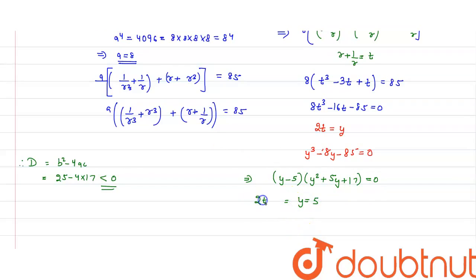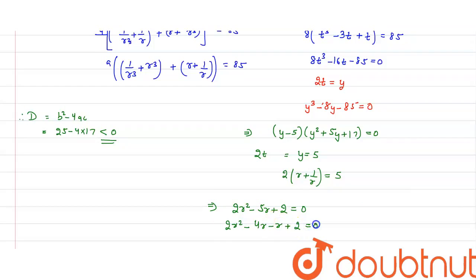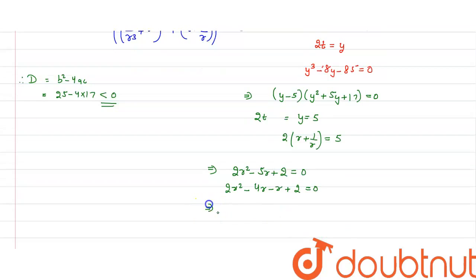Since y = 2t and t = r + 1/r, we get r + 1/r = 5/2. Solving this gives the quadratic 2r² − 5r + 2 = 0. Factorizing: 2r² − 4r − r + 2 = 0, which gives (2r − 1)(r − 2) = 0. So r = 2 or r = 1/2, and a = 8.